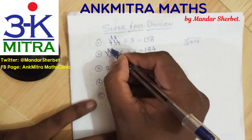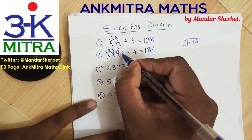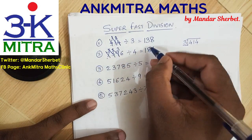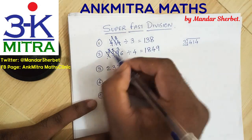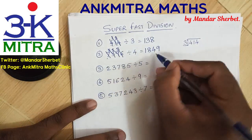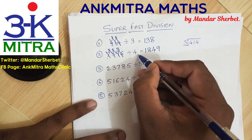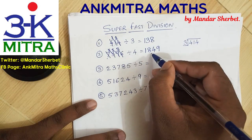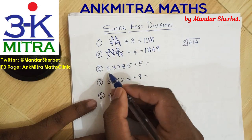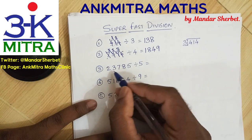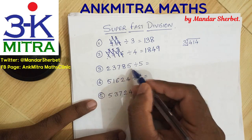4 times 4 is 16. Subtracting 16, what remains is 3. The final number is 36, which is 9 times 4. We write 9 in the answer and 36 cancels out. The final answer for 7396 divided by 4 is 1849.